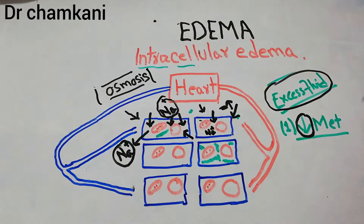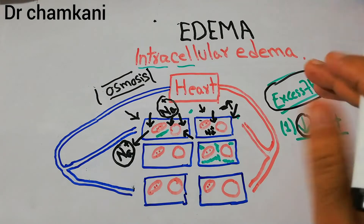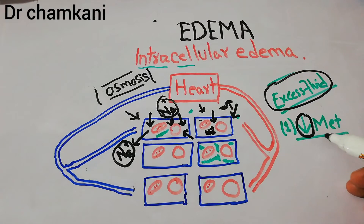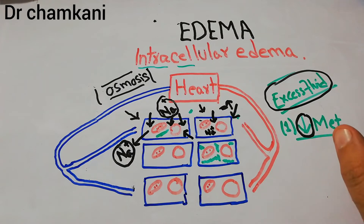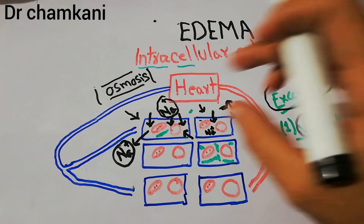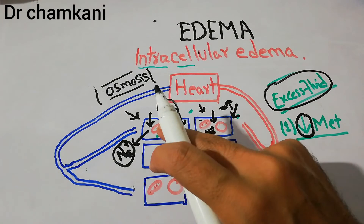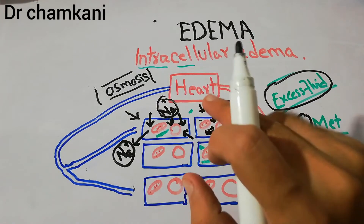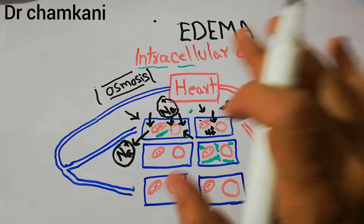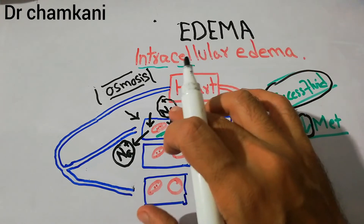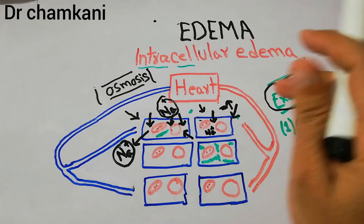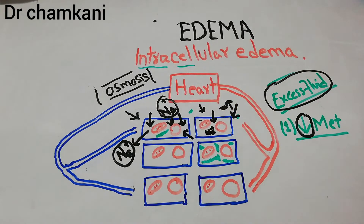The decreased metabolic activities of the cells could be due to any cause — a decreased supply of nutrients, or some form of poisoning where a toxin depresses the mitochondria, nucleus, or other metabolic activities. All of these can lead to intracellular edema. This is the first cause.